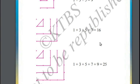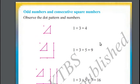Here we can notice a pattern. When we add odd consecutive natural numbers, we will get square numbers.